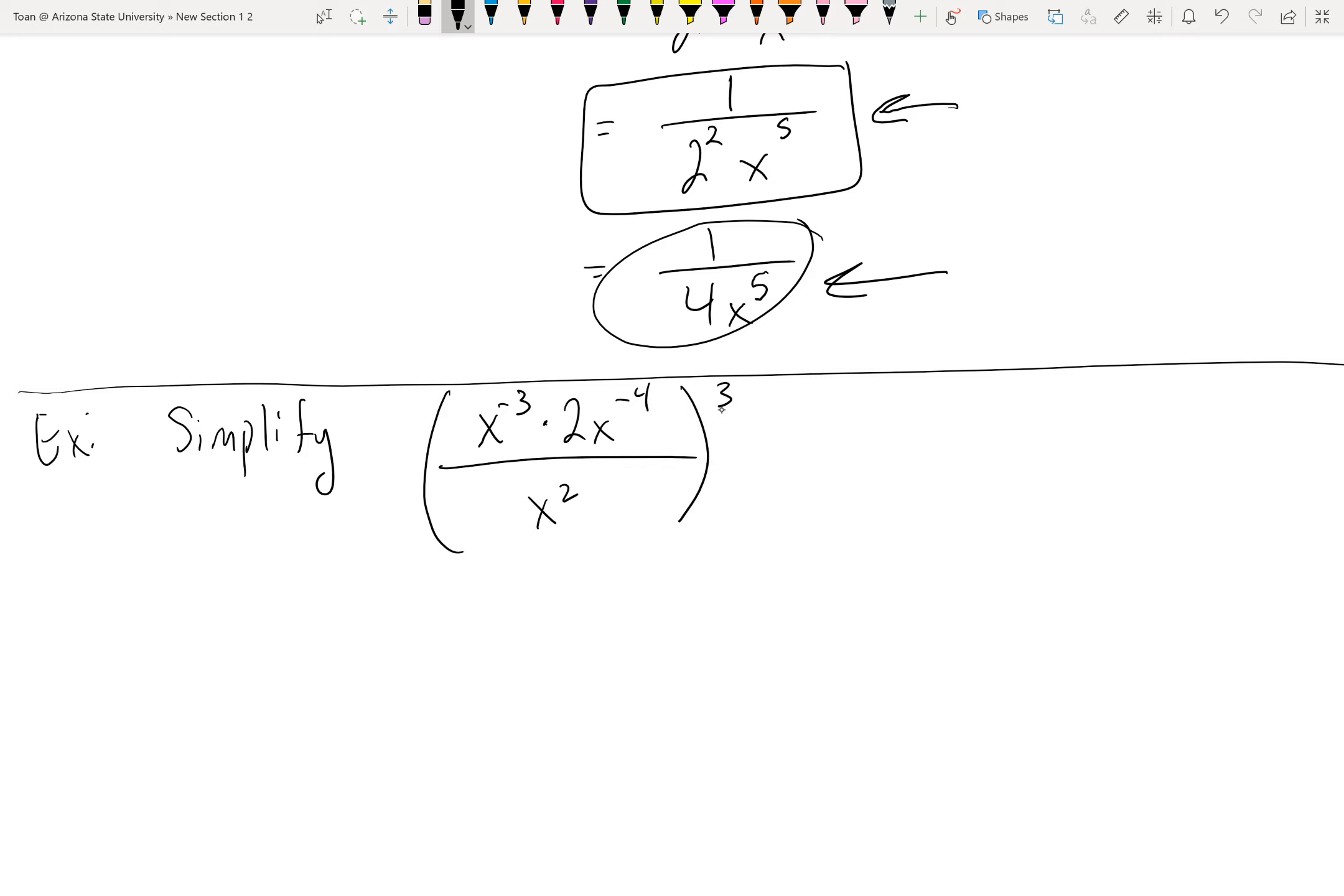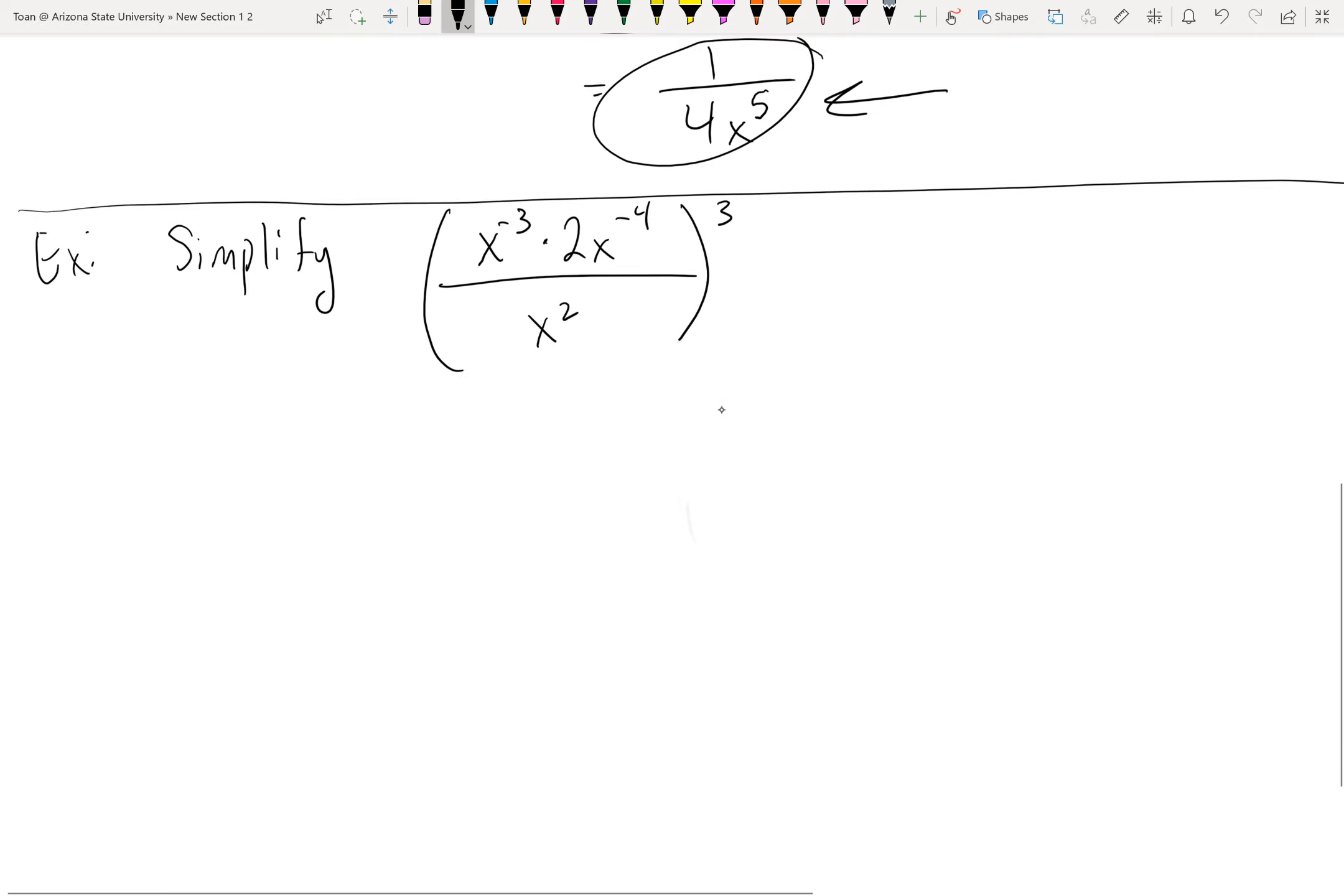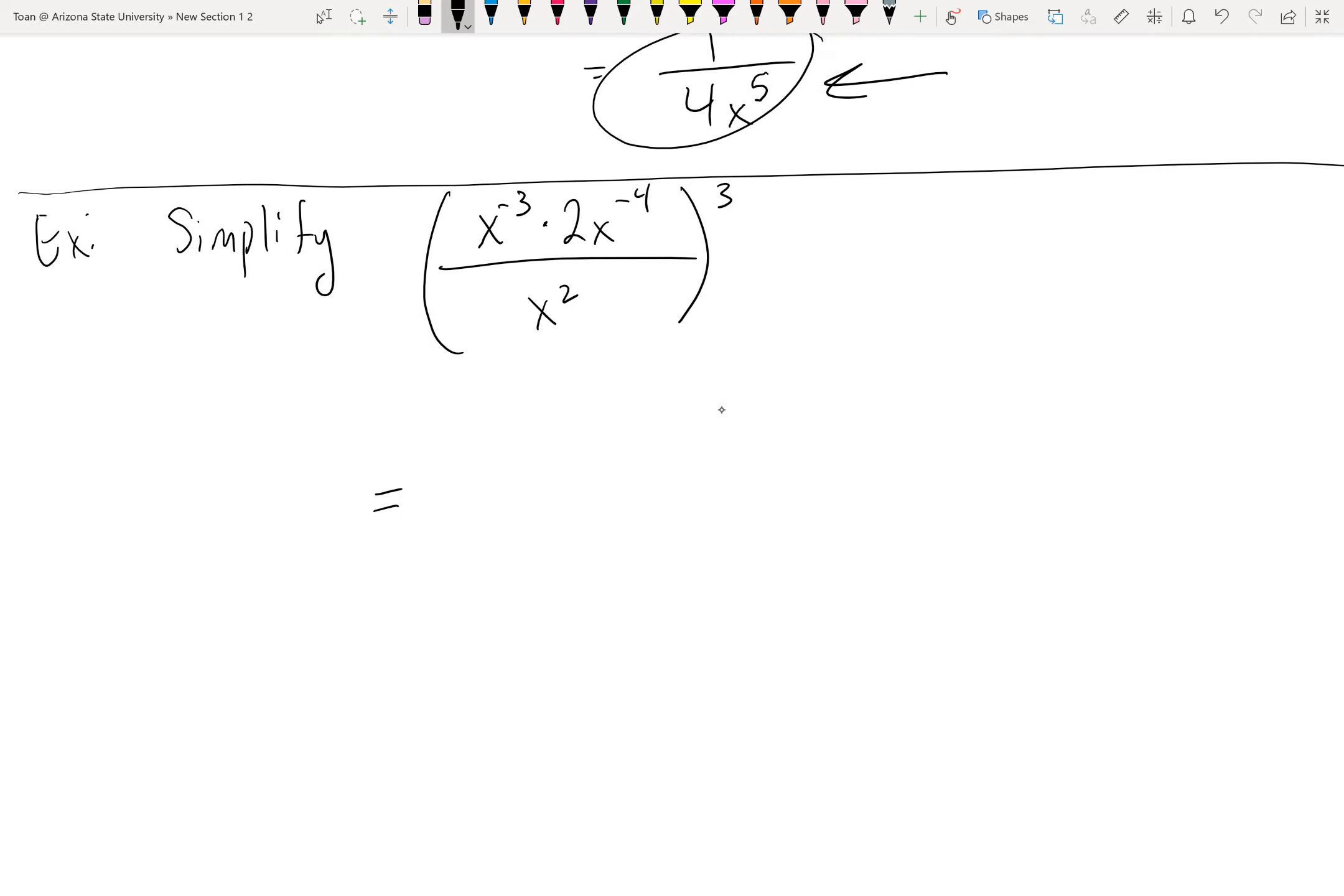Lots of negatives, big parentheses, but who cares? Let's follow the same tips. The first tip I would do is to break down the parentheses, which requires the power property, which is distribution. Again, you're going to multiply this 3 here to all the inside exponents. This guy has an exponent of 1, so distribute here, distribute here, distribute here, distribute there - that gives us x⁻⁹ times 2³ x⁻¹² over x⁶.